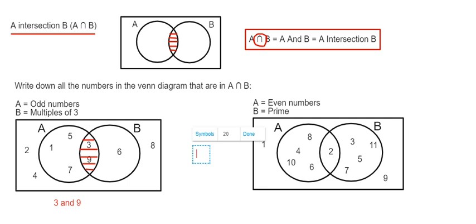So let's have a look at the second example then. So again we've got to write down all the numbers that are in A intersection B. Okay, so again we're just looking at the numbers in the center of the Venn diagram.